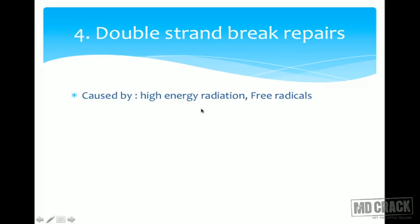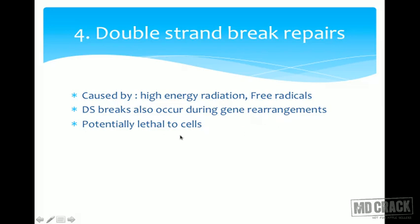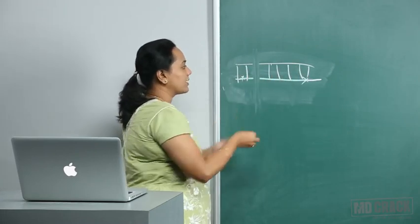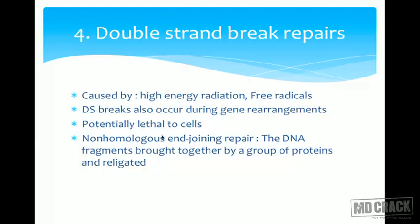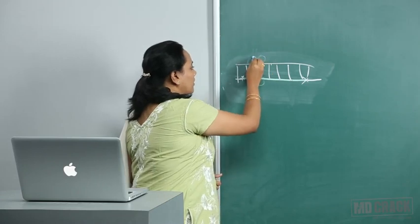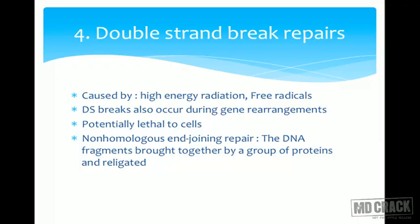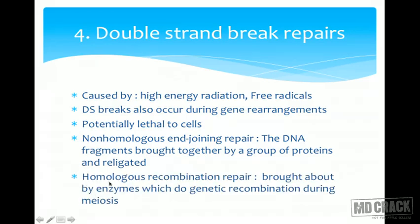Double strand break repair is needed when high-energy radiation or free radicals cause both strands of DNA to break; such breaks also occur during gene rearrangements and are potentially lethal to cells. There are two types: non-homologous end joining (NHEJ), where DNA fragments are brought together by a group of proteins and re-ligated, and homologous recombination repair, which uses enzymes involved in genetic recombination during meiosis.